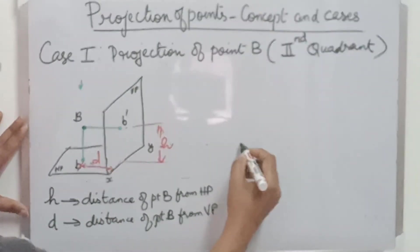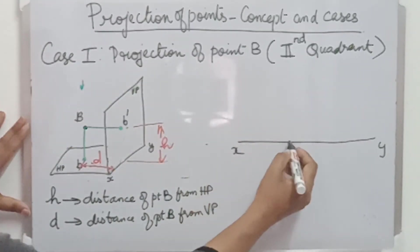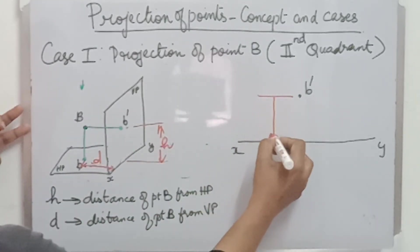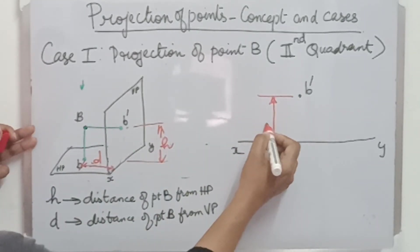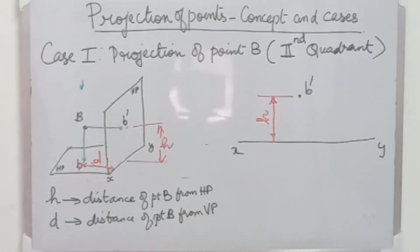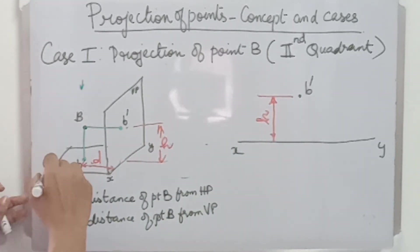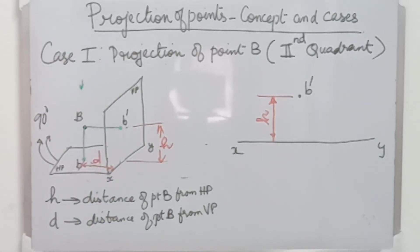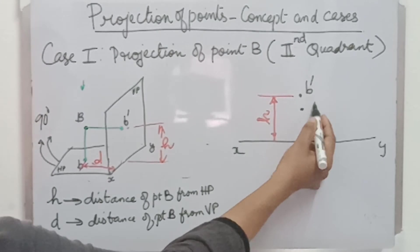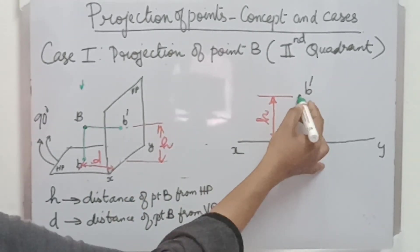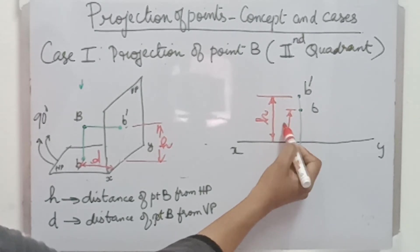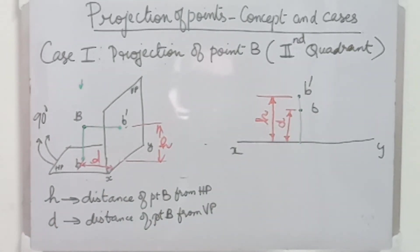To draw the front view and top view, that is the orthographic projection, first draw the reference line XY and mark B dash. B dash is at a distance H from the XY line. In order to draw the top view, we need to rotate the horizontal plane 90 degrees upwards so that point B will be somewhere here. Point B and B dash lie on the same projector. The distance of B from the XY line is D. This completes case 2.